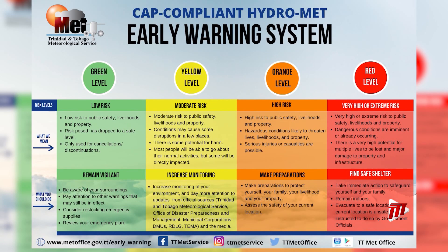There are basically four colors. The first one is green. You have yellow, orange, and red. The green is usually used for cessation of events. The yellow is for moderate risk.